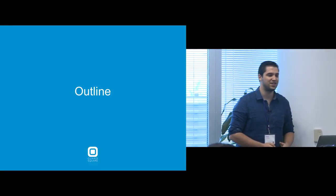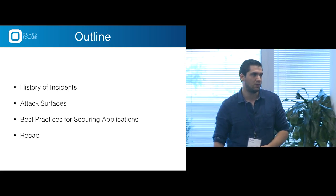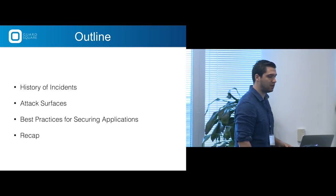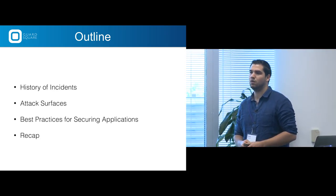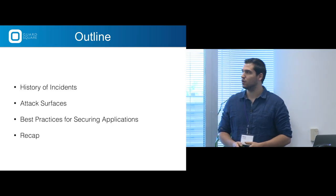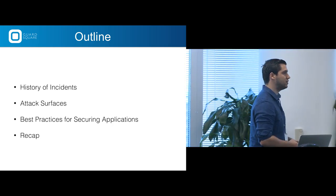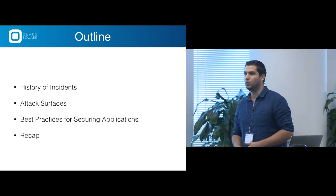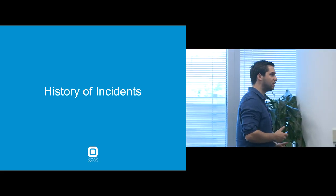The outline of today's talk will be a history of incidents — some application security issues that happened in the past — the attack surfaces of a mobile application, how hackers attack your application, what are the best practices to secure these applications, and a little recap of what we saw. So let's start with a history of incidents.